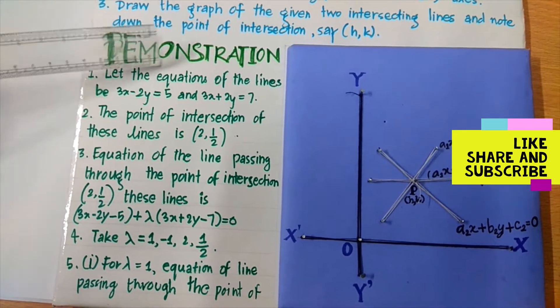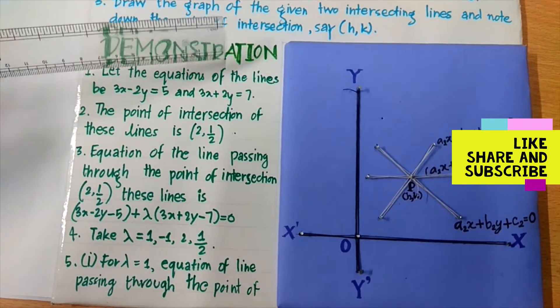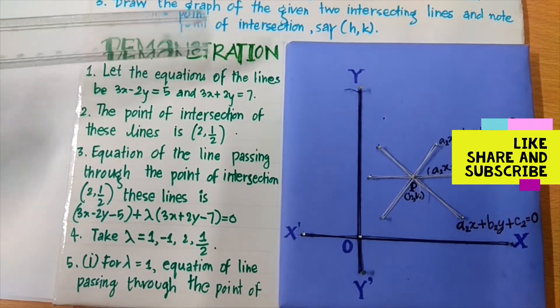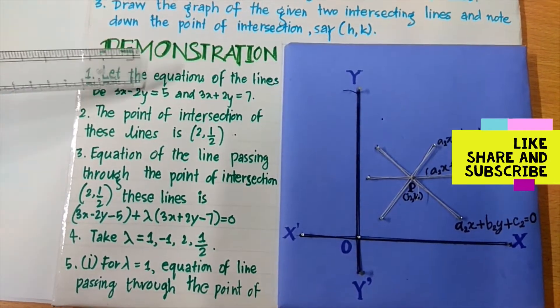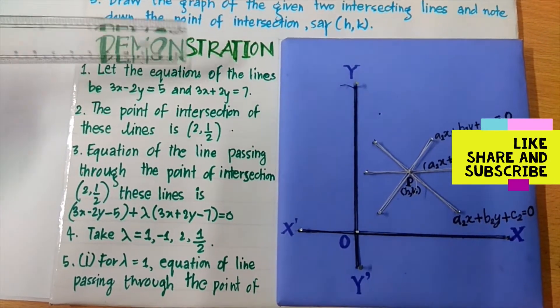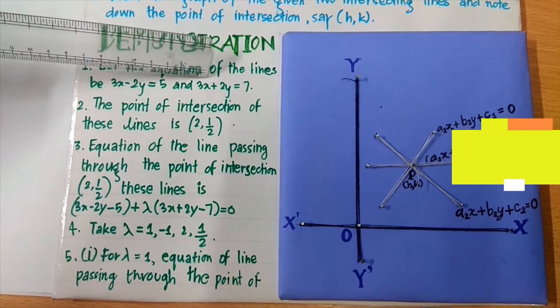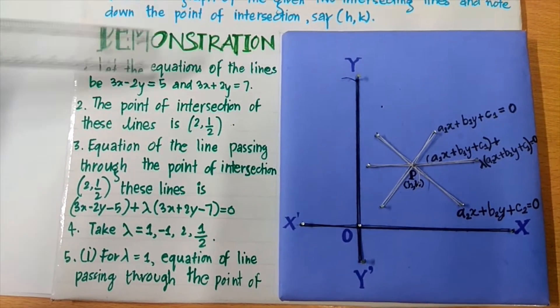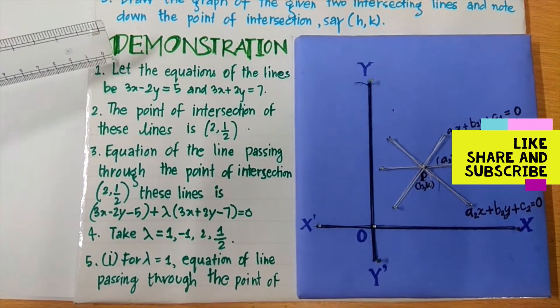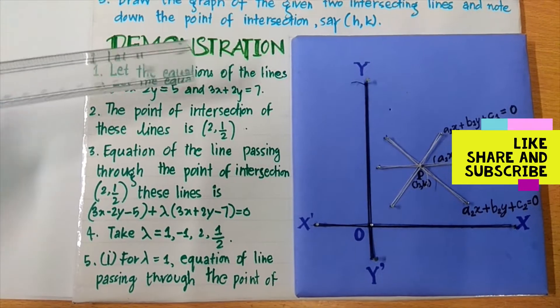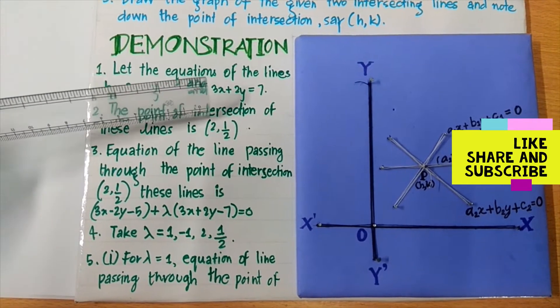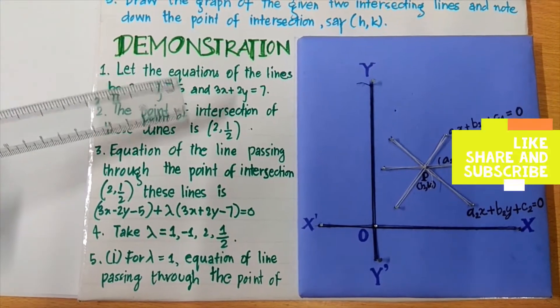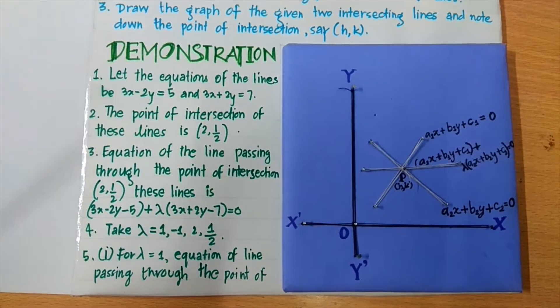There are two lines and their equations are 3x minus 2y equals to 5 and 3x plus 2y equals to 7. When we solve both equations, we get the point of intersection as (2, 1/2).